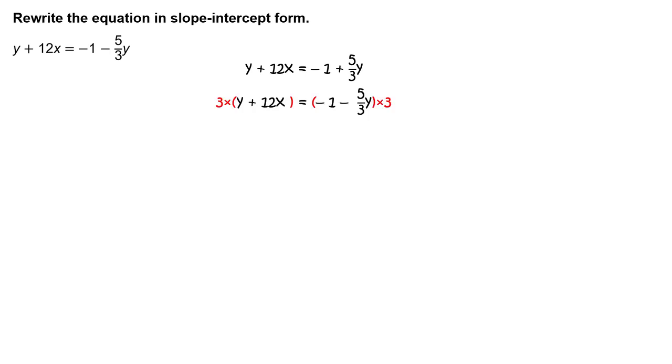Multiply each side of the equation by 3. Use the distributive property and simplify to get 3y plus 36x equals negative 3 minus 5y.